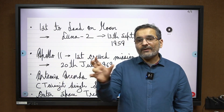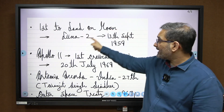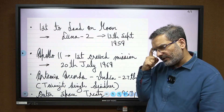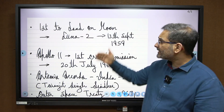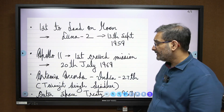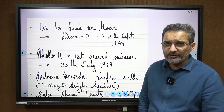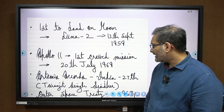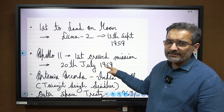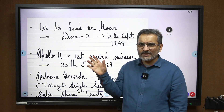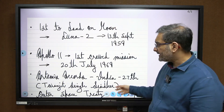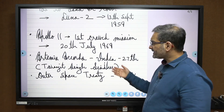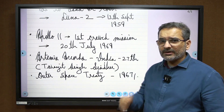Going back in history — who was the first to land on the moon overall? That was Luna-2, which landed on the 13th of September 1959. It was a hard landing — they crash-landed — but it was the first object to ever physically interact with the moon. The first crewed mission on the moon was Apollo 11, with Neil Armstrong and Buzz Aldrin landing on the 20th of July 1969.